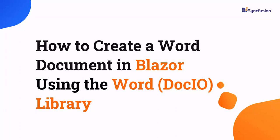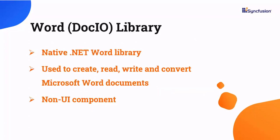Hi everyone, welcome to this video on how to get started with Syncfusion Word Library in a Blazor server application. DocIO is a native .NET Word library that is used to create, read, write, and convert Microsoft Word documents to other file formats. To explore other features in our DocIO library, please refer to the link in the card above.